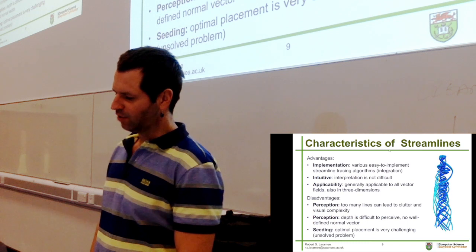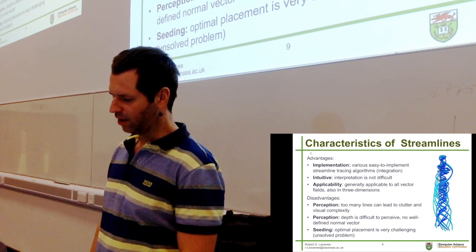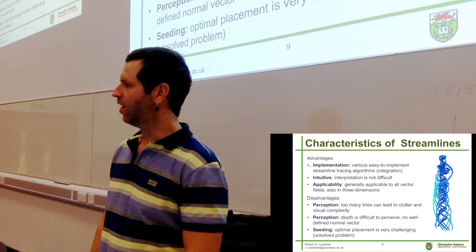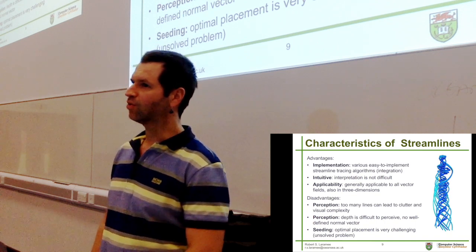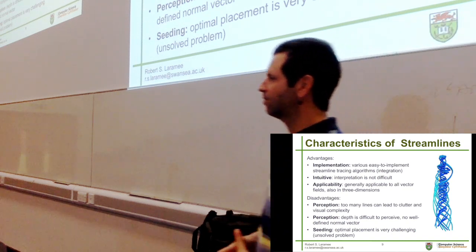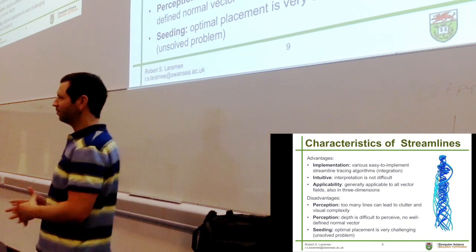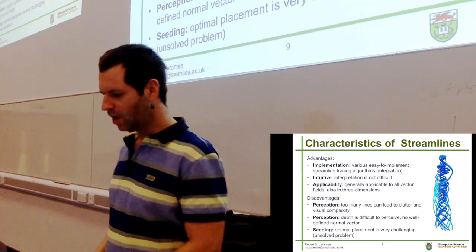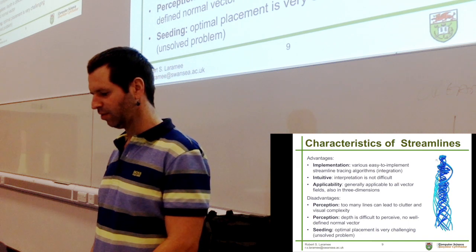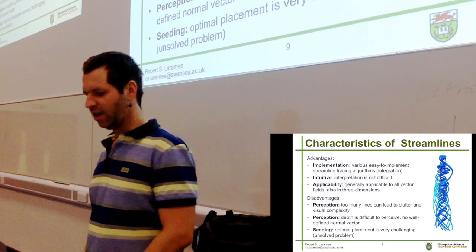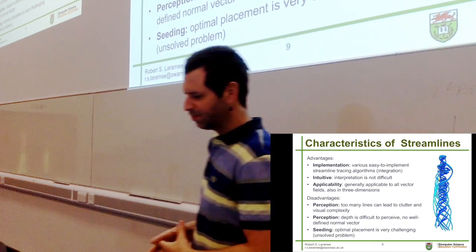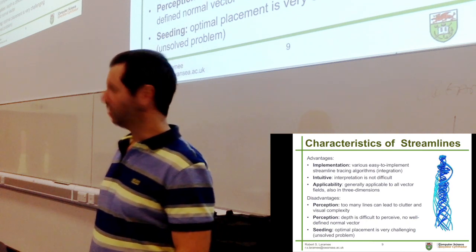It's good to compare stream surfaces with streamlines. Why are streamlines so often used to depict flow? Well, implementation is certainly an advantage — streamlines are the most commonly used geometric flow-based technique. They're easy to implement, despite what it looked like in the last lecture. They're intuitive, so their interpretation is not difficult. These are some 3D streamlines, and they are very applicable to all vector fields, both in 2D, on surfaces, and in 3D.